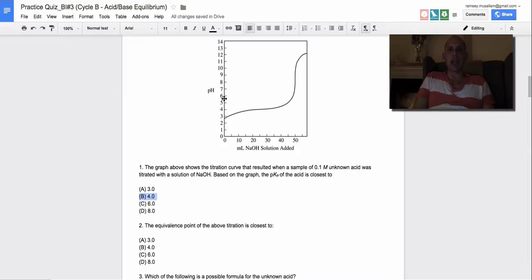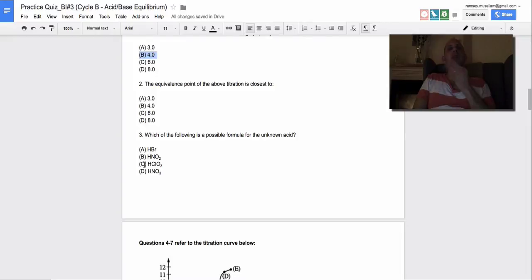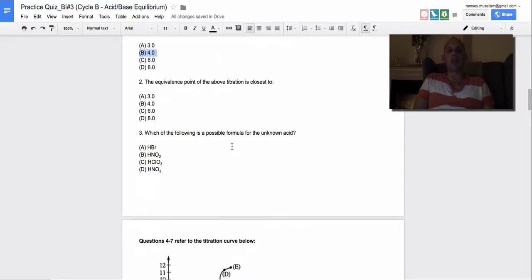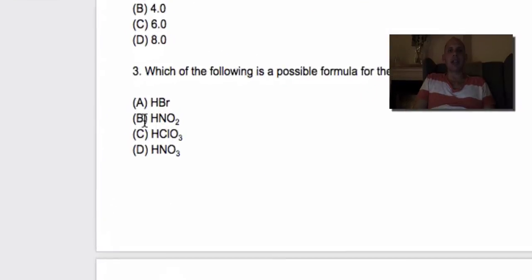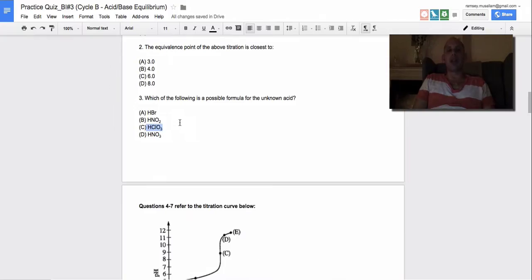The equivalence point - so we find the largest vertical region and halfway through that looks like it's 8. That's where the indicator will change color. The answer is D, 8. Which of the following is a possibility of the unknown acid? So we know that this is a weak acid titration, and the only weak acid on this list is HNO2.